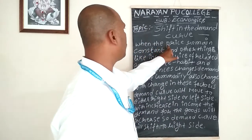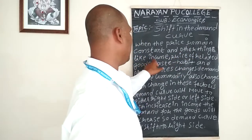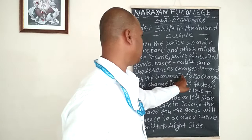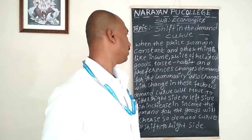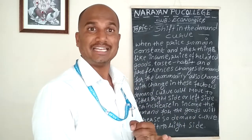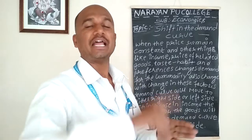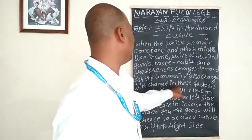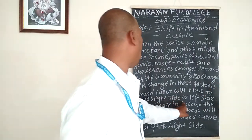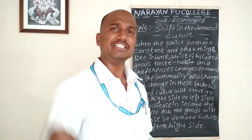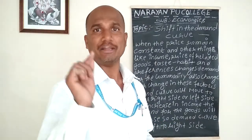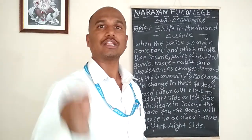When the price remains constant and other things like the income of the consumer, price of related goods, taste, habits, and preferences change, the demand for the commodity also changes. With a change in these factors — change in income, change in price of related goods, tastes, habits, and preferences — the demand curve will move either to the right side or left side. Changes in the income of consumer lead to shift in the demand curve, either right side or left side.